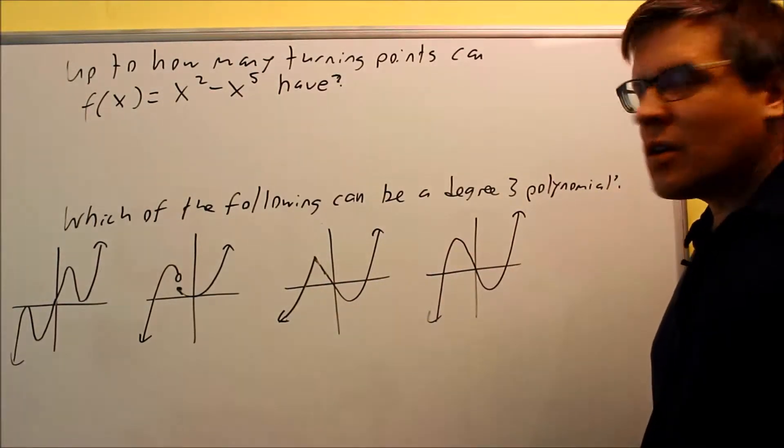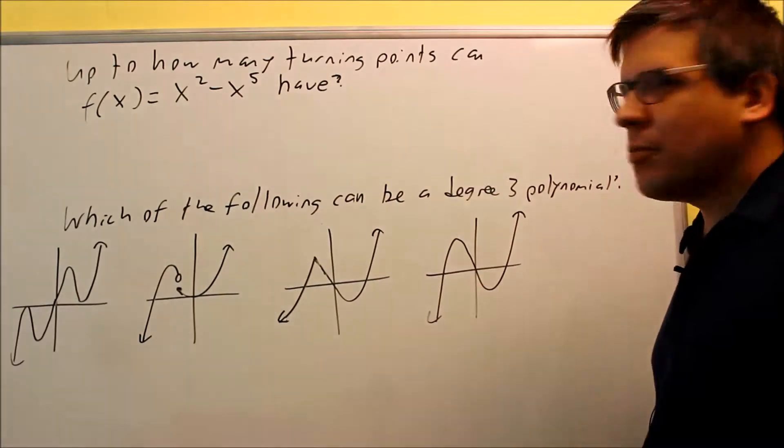Okay, it says up to how many turning points can f(x) = x² - x⁵ have?